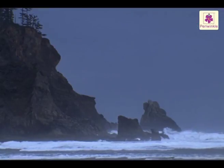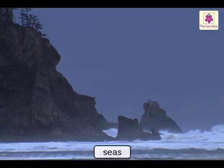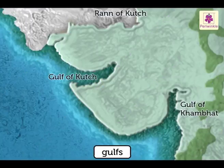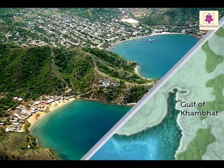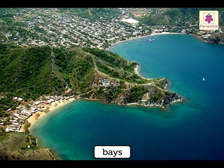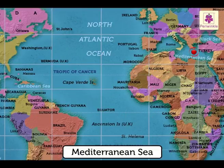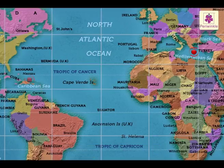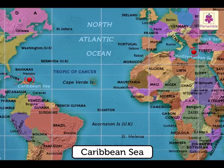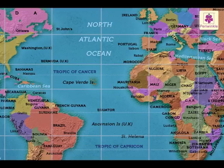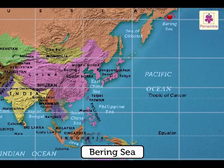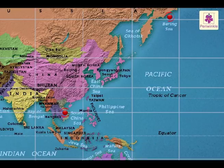Each ocean includes smaller water bodies called seas, gulfs and bays. These lie along the margins of an ocean. For example, the Mediterranean Sea and the Caribbean Sea are part of the Atlantic Ocean. The Bering Sea and the South China Sea are a part of the Pacific Ocean.